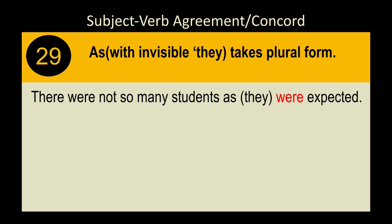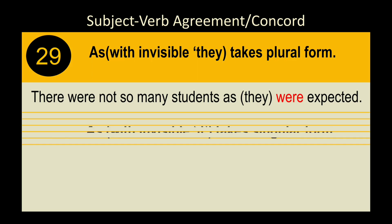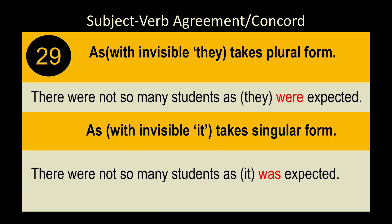Rule 31: When 'they' is invisible (implied) with the word 'as,' the verb takes plural form. Example: 'There were not so many students as expected' — this can mean 'as it was expected' (invisible 'it,' singular) or 'as they were expected' (invisible 'they,' plural). Both interpretations are possible unless the context specifies otherwise.